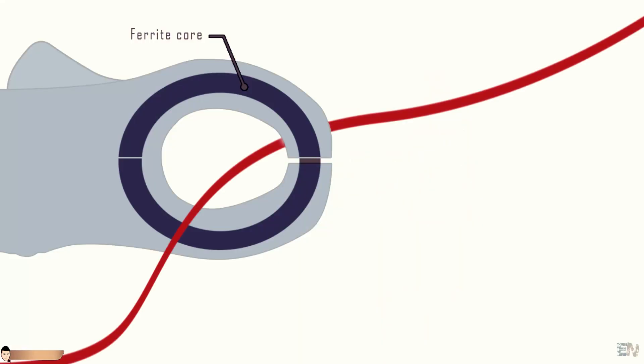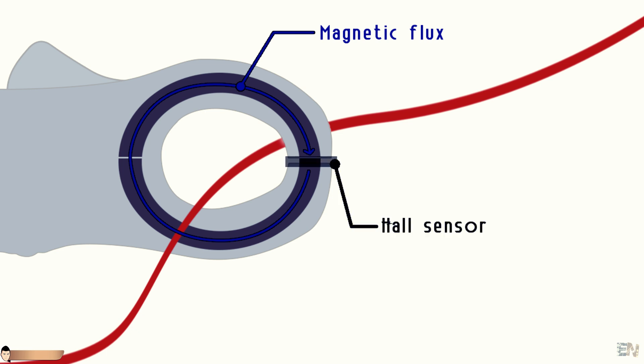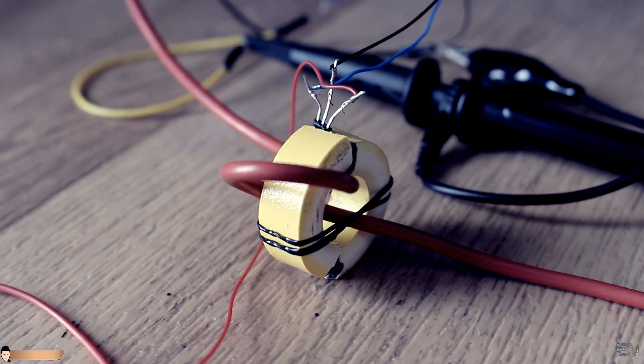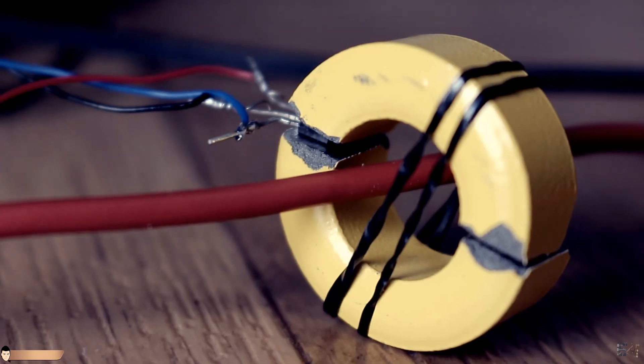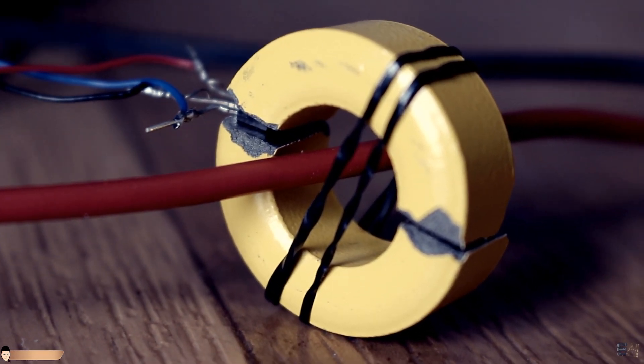The current in the primary wire, which is the measured wire, will magnetize the core. This magnetic field is measured with the sensor. All we have to do is to apply a constant current, like for example 1 amp, through the wire and measure the voltage output of the hall sensor placed in between the ferrite core in order to obtain the scale.